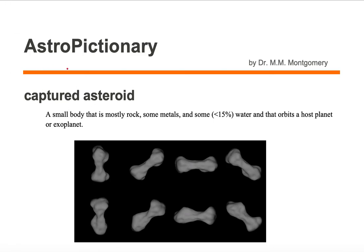So the asteroid part of this definition is the first part: a small body that is mostly rock with some metals and some water.